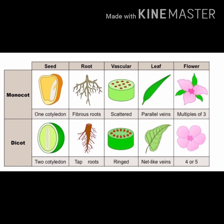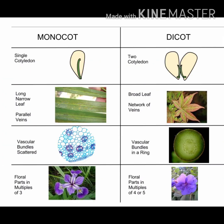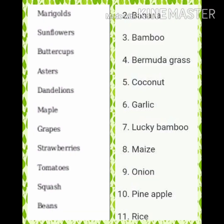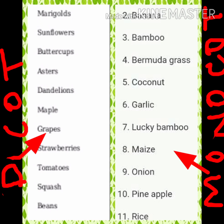In monocotyledonous plants, petals are present in 3 or multiples of 3 — that is, 3, 6, 9, 12, and so on — which is why they are called trimeris. The diagrams in the textbook are given without names, so examples have been provided here. You can remember 3 to 4 examples each for monocot and dicot plants.